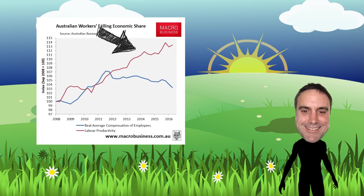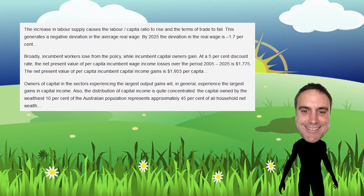He notes wages are stagnant despite increases in labour productivity, and analyses a report by the Productivity Commission. The key quote: 'The increase in labour supply causes the labour-capita ratio to rise and the terms of trade to fall. This generates a negative deviation in the average real wage. By 2025, the deviation in the real wage is minus 1.7%. Broadly, incumbent workers lose from the policy, while incumbent capital owners gain. At a 5% discount rate, the net present value of per capita wage income losses over 2005–2025 is $1,775, while capital income gains are $1,953 per capita. The capital owned by the wealthiest 10% of the Australian population represents approximately 45% of all household net wealth.'